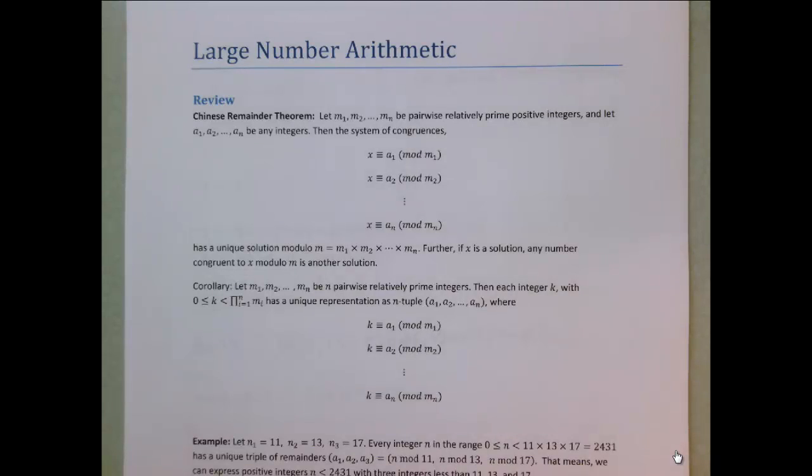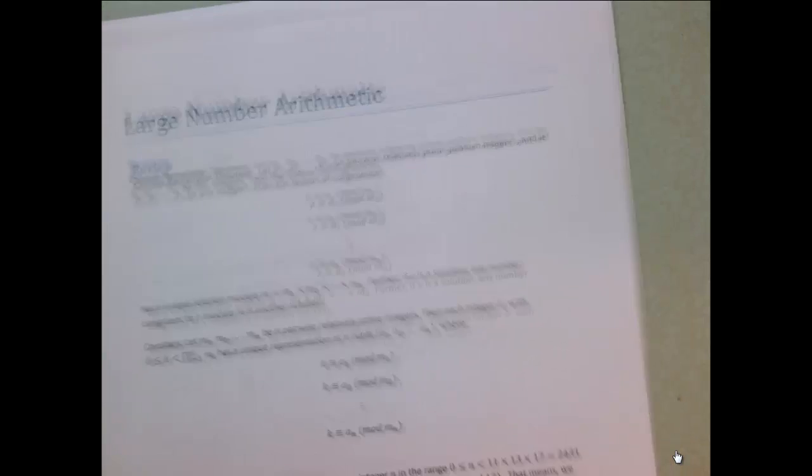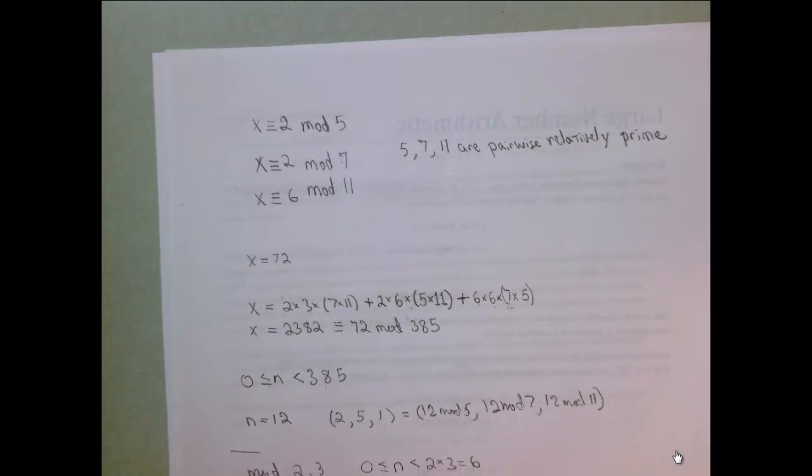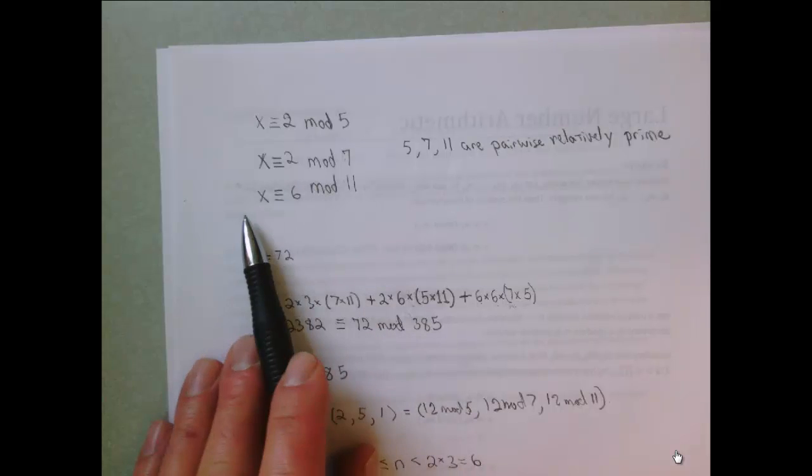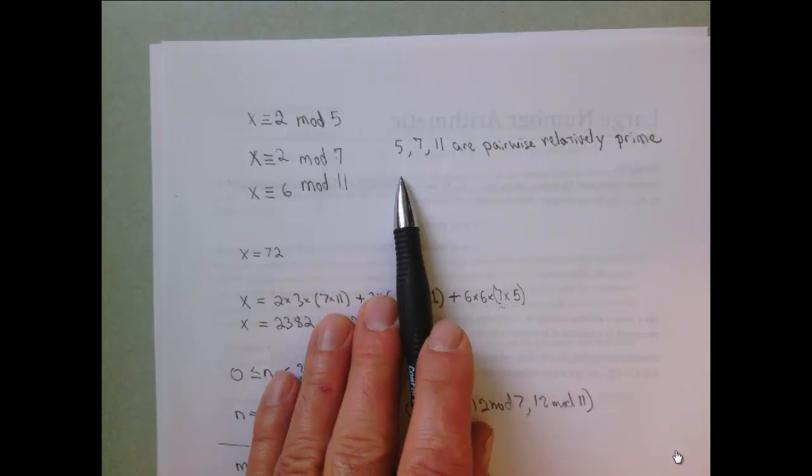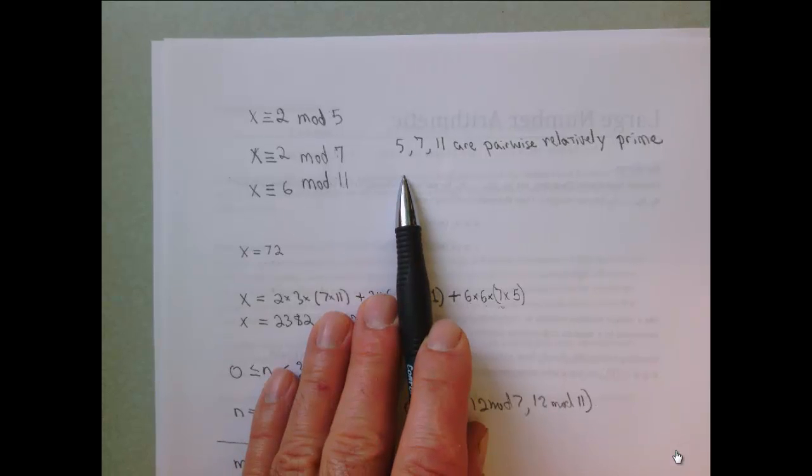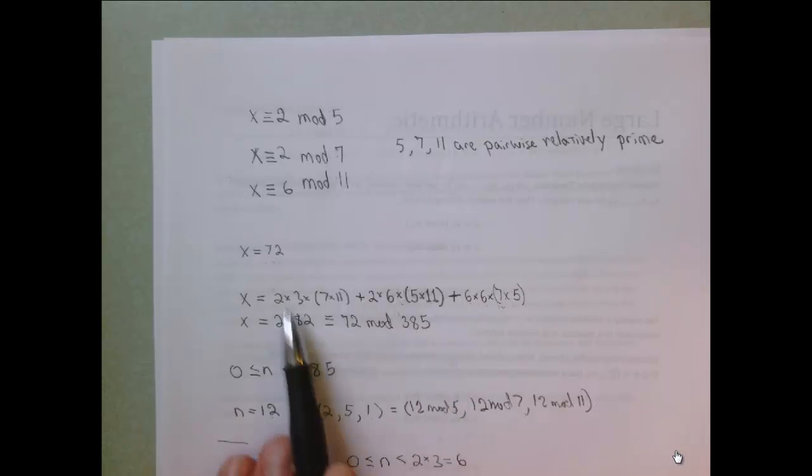The Chinese Remainder Theorem gives us information about how to solve systems of linear congruences. For example, if x is congruent to 2 modulo 5, x is congruent to 2 modulo 7, and x is congruent to 6 modulo 11, since 5, 7, and 11 are pairwise relatively prime, we're guaranteed that there has to be at least one solution in the range from 0 up to 384, and it turns out in this case that solution is 72.